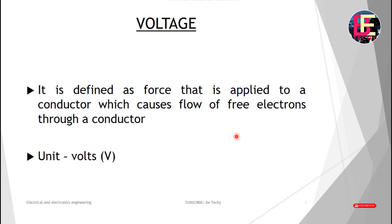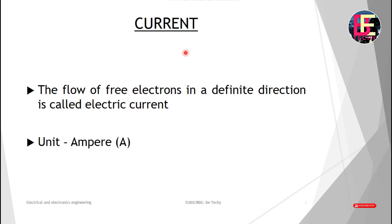The next thing we use is current. What is current? The flow of free electrons in a definite direction is called electric current. The unit of current is the Ampere. Voltage is the amount of pressure that drives the current.